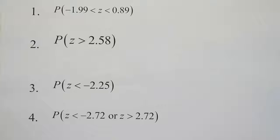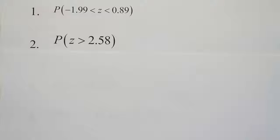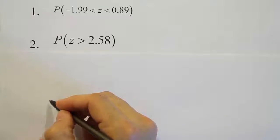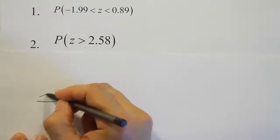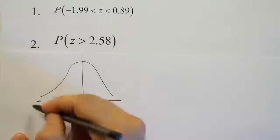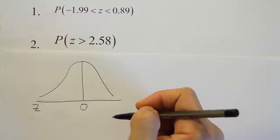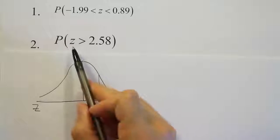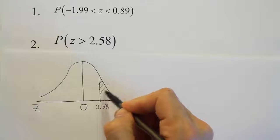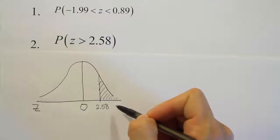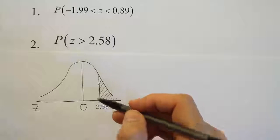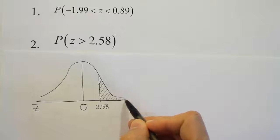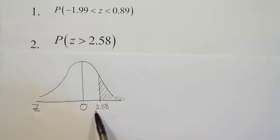For our second example, we're finding the probability that z is greater than 2.58. I'll draw the bell curve, label the z-axis with 0 in the center, and place 2.58 on the right-hand side since it's positive. Because we want the probability that z is greater than 2.58, we shade the area to the right. The calculator needs to know the start of the shaded region — which is 2.58 — but where does it end?